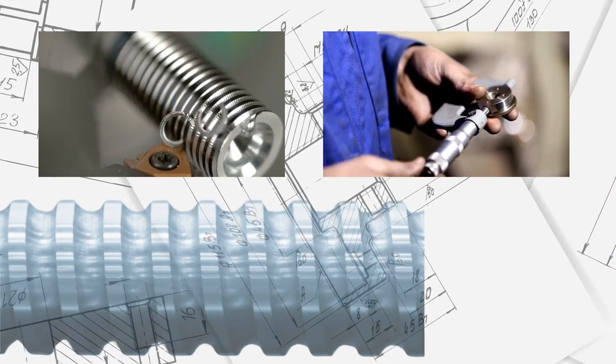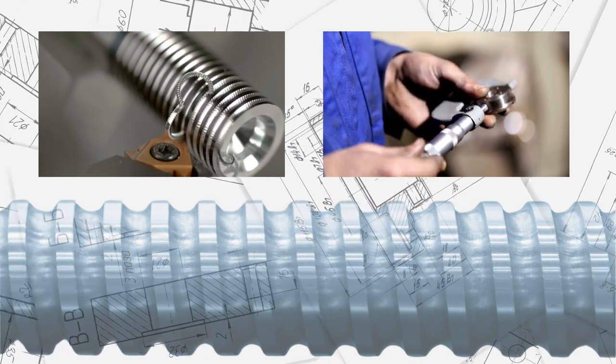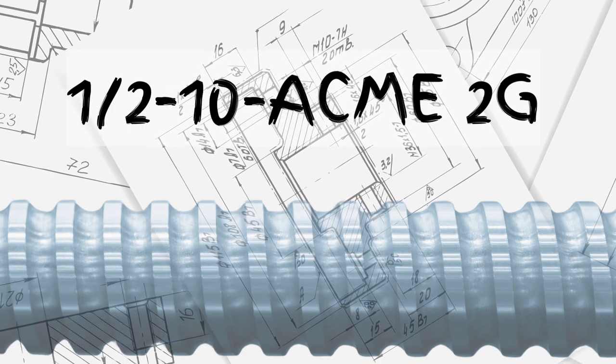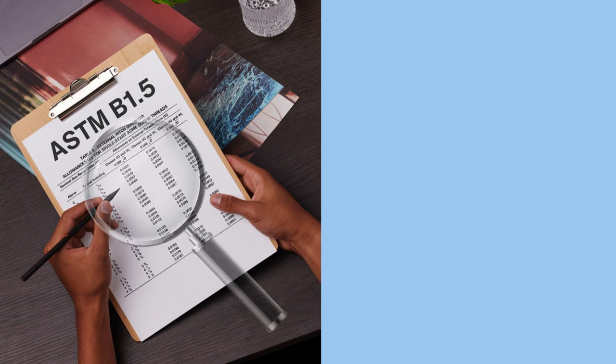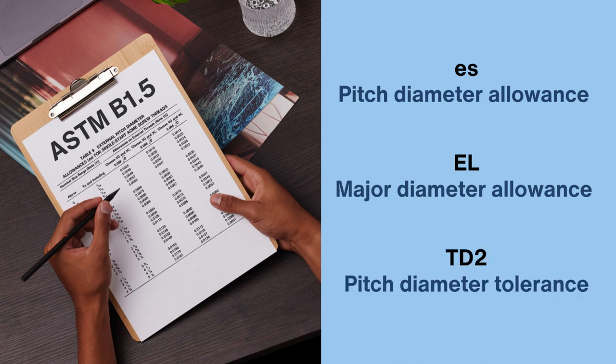To manufacture or measure a thread, one has to know the maximum and minimum permissible values of the basic dimensions. These values are calculated according to the thread series and class. The calculations are made in two steps. In the first step, you must obtain the values for the following parameters from the charts in ASTM B1.5. E-S, which is the allowance for pitch diameters. E-L, the allowance for major and minor diameters. And the pitch diameter tolerance, T-D2.